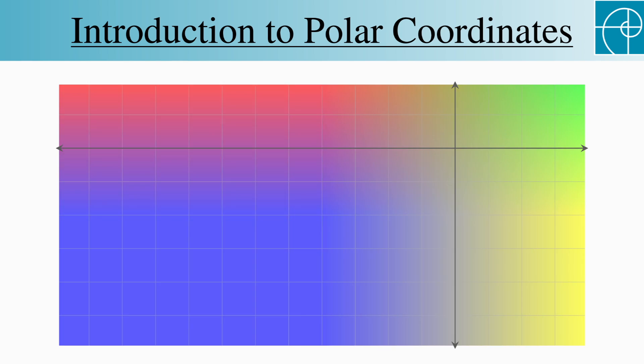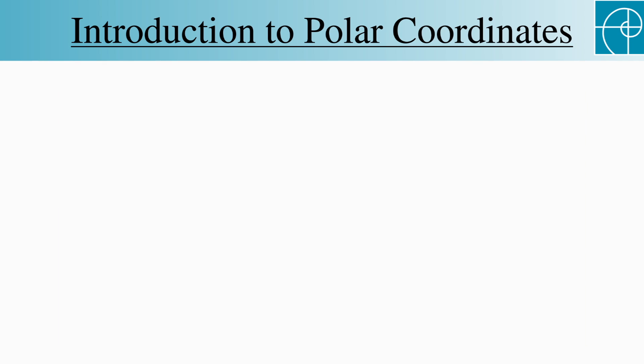But rectangular coordinates aren't always the most convenient way to label the plane. Another useful way is the polar coordinate system. In this system, we still specify an origin, sometimes called the pole, and a polar axis, which is a ray emanating from the origin.